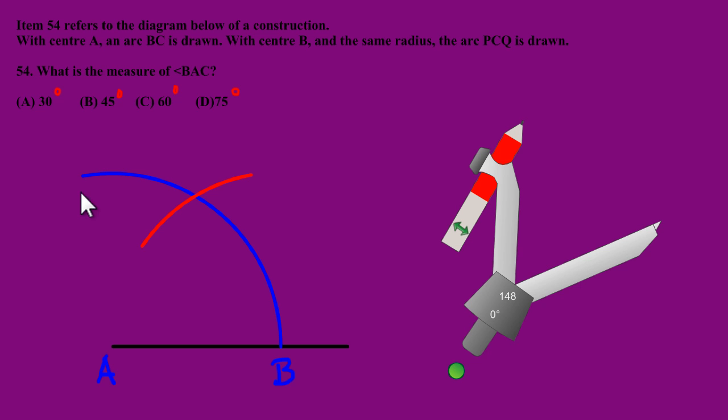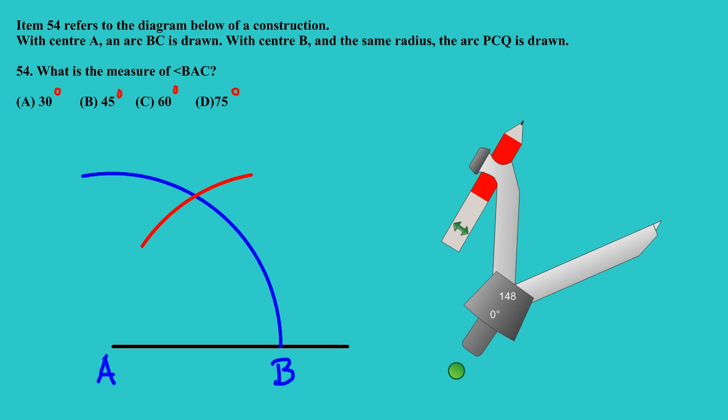Meaning that if you notice, the distance between my pencil point and the point of my compass didn't change. It's the same distance. So that's what they mean by the same radius. The arc PCQ is drawn, so the arc PCQ—let's just change the color now—and I'm just going to simply draw that arc PCQ.